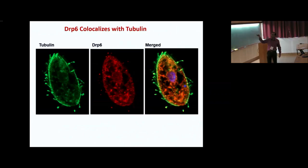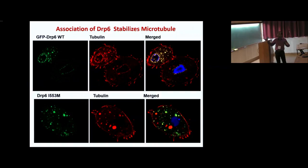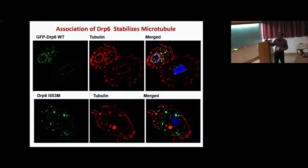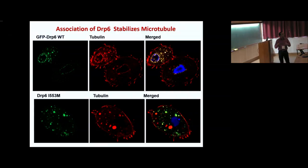When we overexpressed GFP-tagged DRP6 and used tubulin antibody, tubulin very nicely co-localizes with DRP6. Furthermore, DRP6 enriches or stabilizes microtubules on the nuclear envelope — wherever there is more DRP6, there is more microtubule, and wherever there is less DRP6, there is less microtubule — showing a positive correlation. Importantly, the I553 mutant that doesn't go to the nuclear envelope still associates with microtubules, confirming the nuclear recruitment defect is due specifically to loss of cardiolipin interaction.